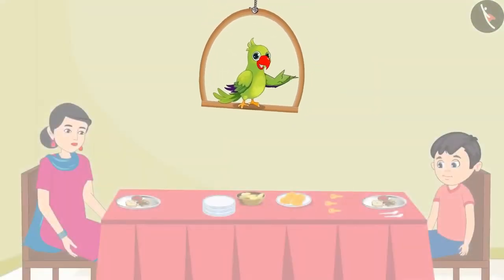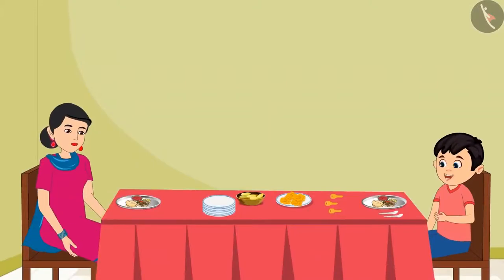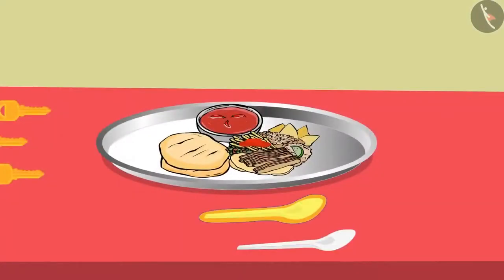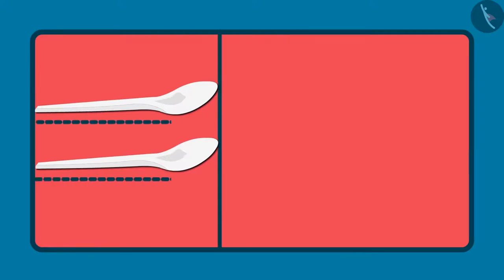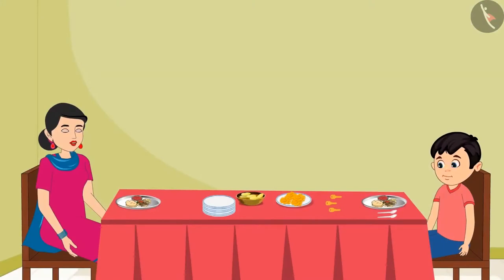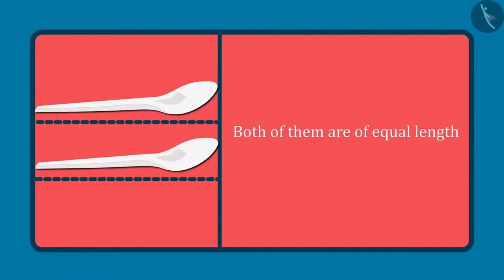Chotu and his mother have sat down to have their food. Mother asks: Chotu, can you please give me a spoon — the short one or the long one? Chotu asks which one, but mother explains: Both these spoons are of the same length. Neither of them is short or long. Chotu disagrees, saying this spoon is long and this one is short. Mother corrects him: This spoon looks longer because it is placed a little ahead. Keep both spoons together so that one end of both is aligned. After aligning them, Chotu realizes: Both of them are of the same length. Understood.